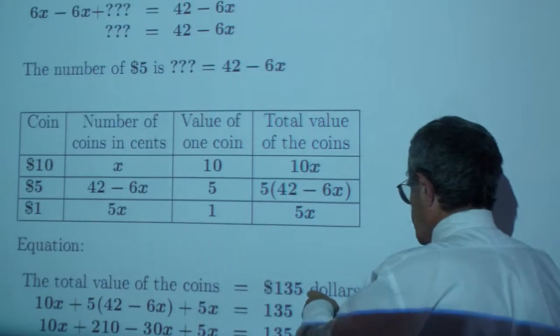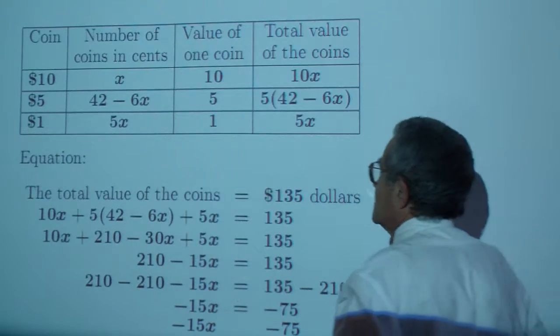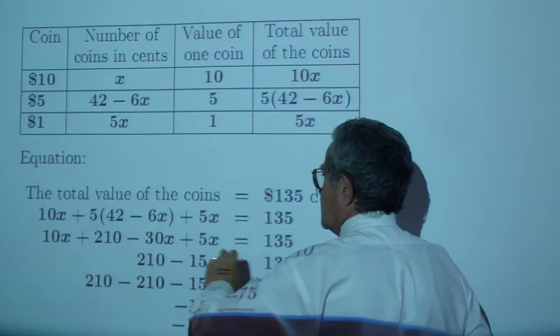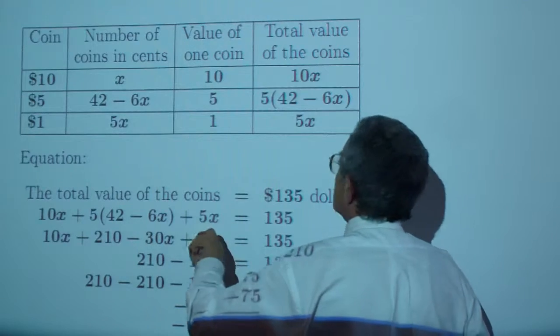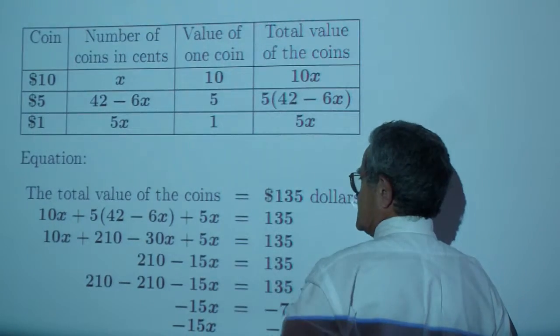Now, the total value of the coins is $135. If I add all of these, I get the value. I add these three numbers here.